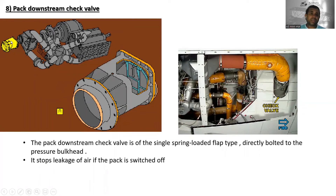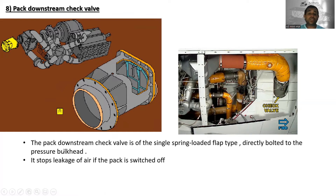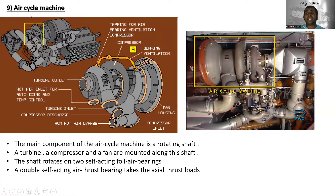The pack downstream check valve — here is its location. The pack downstream check valve is of the single spring-loaded flap type, directly bolted to the pressure bucket. It stops leakage of air if the pack is switched off.